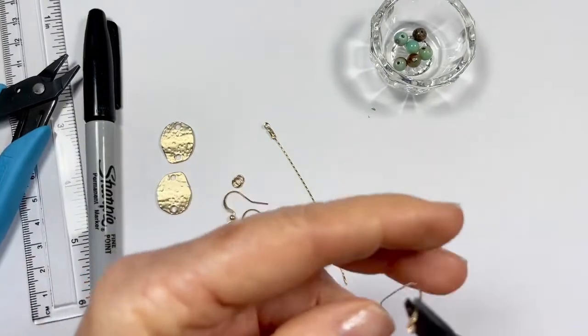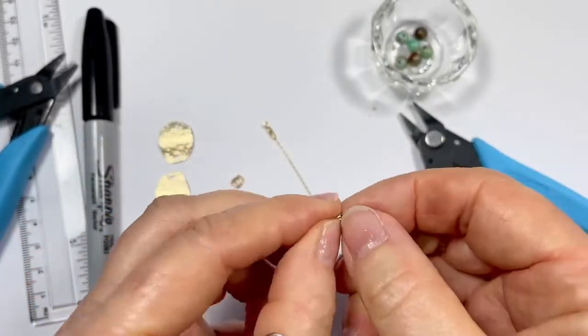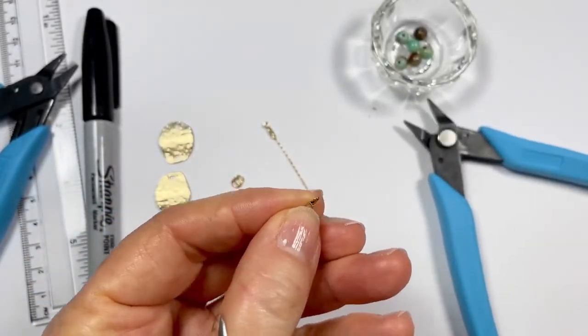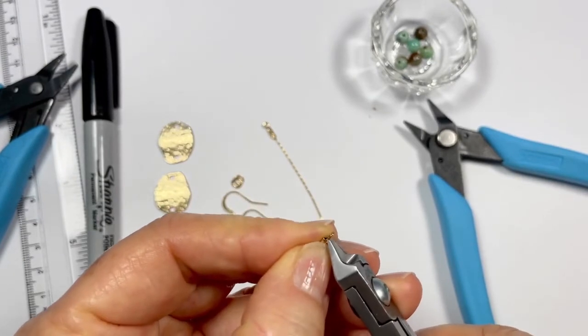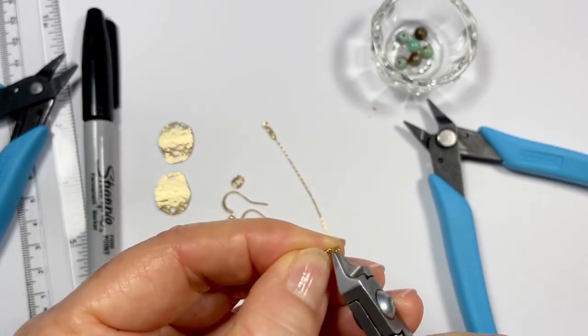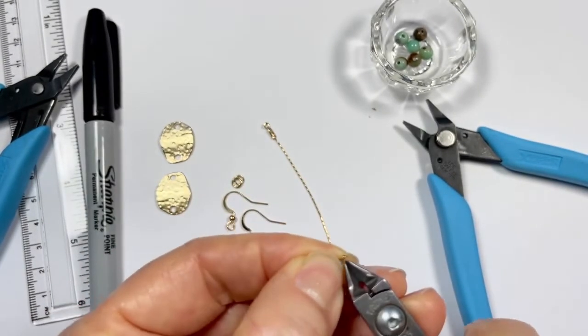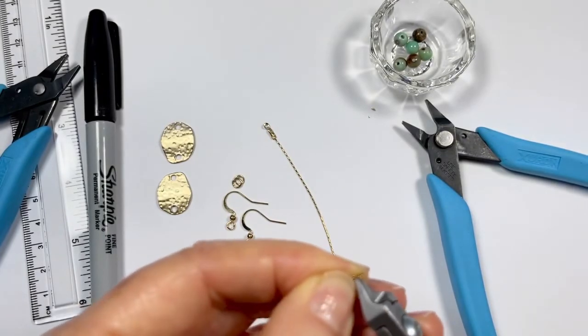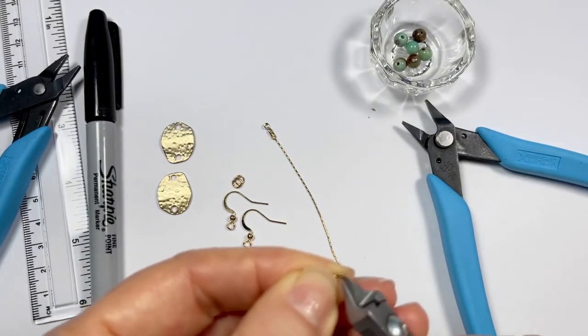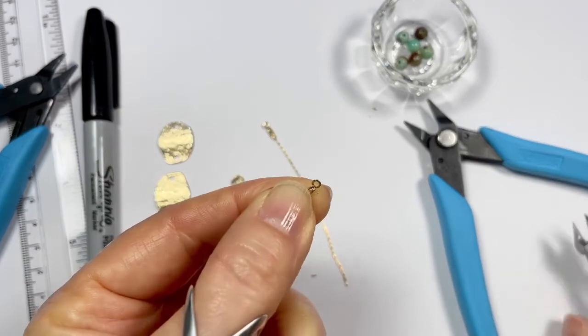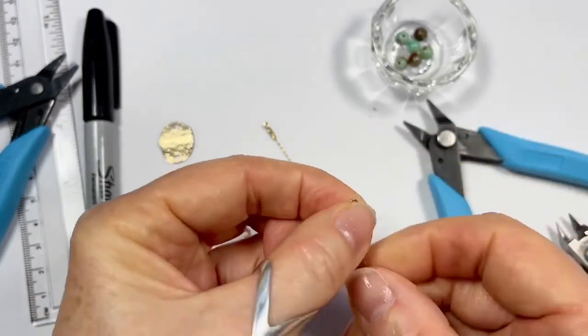There we go. And once again trim off this little bit of chain that's extended through there. Just make sure that you don't catch the loop as well. There we go. So we've got our two pieces here now.